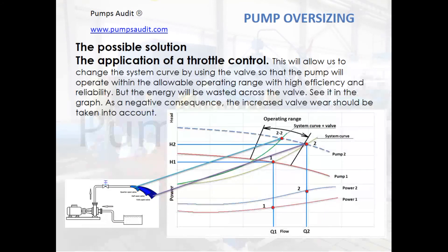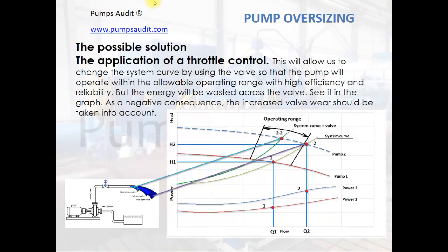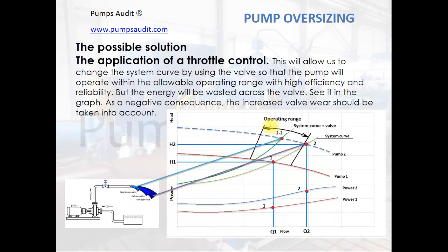If we understand that the pump is oversized and operates beyond the right border of the operating range, what can we do to bring operation within the operating range? One possible solution is the application of throttle control. Using a control valve to change the system curve allows the pump to operate within the allowable operating range with higher efficiency and reliability. However, energy will be wasted across the control valve. Closing the control valve moves the system curve to the left, shifting the operating point from 0.2 to 0.22, which places it within the operating range.